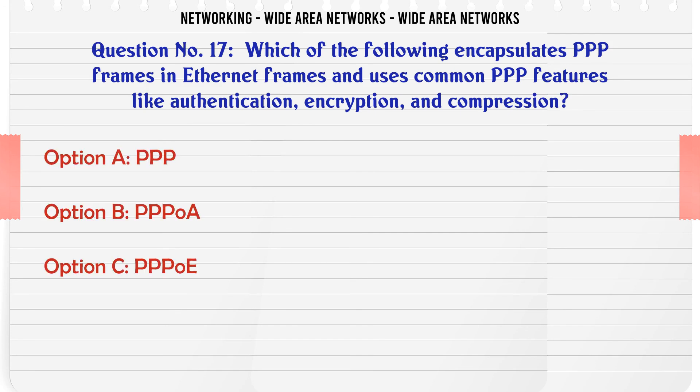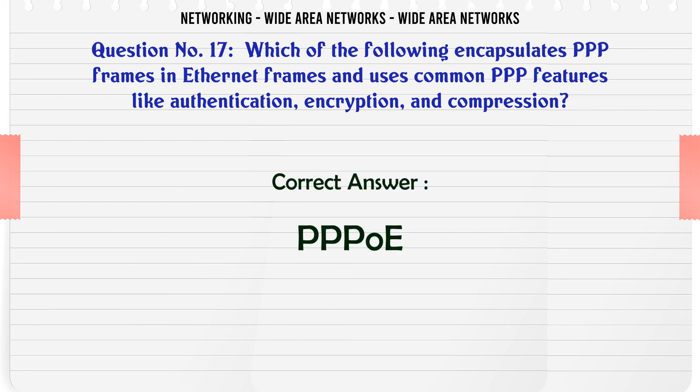Which of the following encapsulates PPP frames in Ethernet frames and uses common PPP features like authentication, encryption, and compression? A. PPP. B. PPPoA. C. PPPoE. D. Token Ring. The correct answer is C: PPPoE.